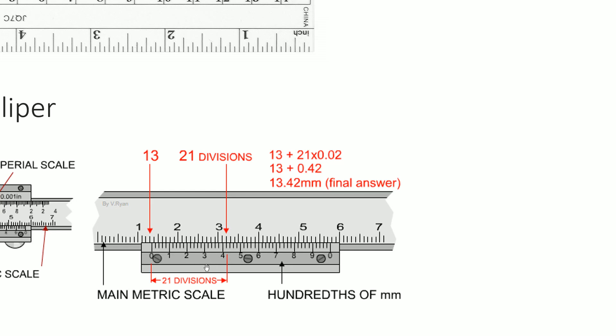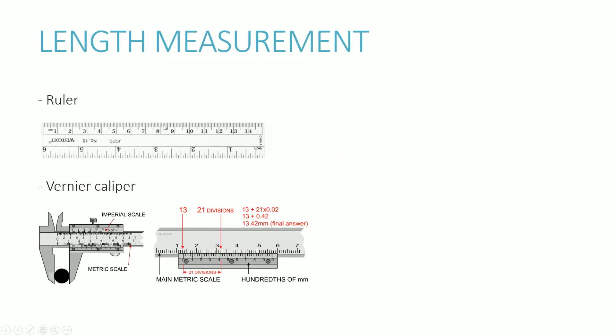And as I said before, each little unit or each division equates to 0.02 millimeters. So what that means is we know that it's 13 point something and then the point something is what you just found, which is 21 divisions and each division is 0.02 millimeters. So if you go 21 times 0.02, you get 0.42. And you add that on to the 13 millimeters that we found from the top division, and so that's 13.42 millimeters as the final answer, which you can see is more accurate than using a simple ruler.